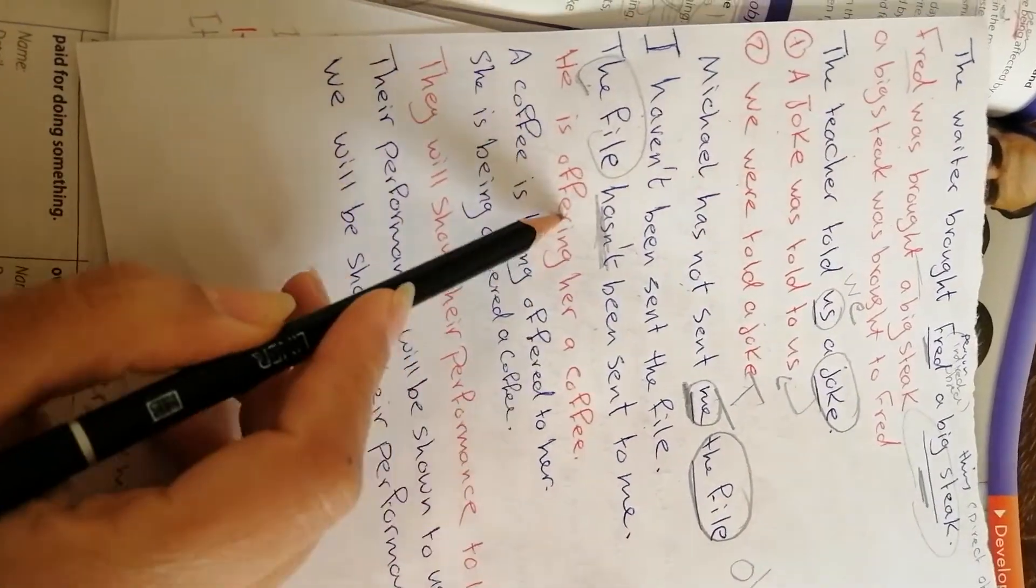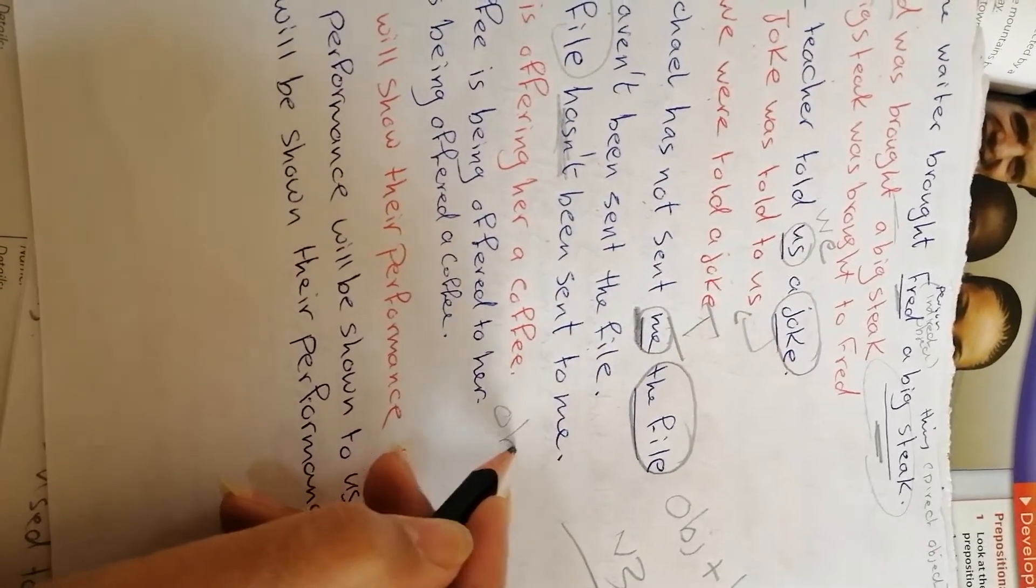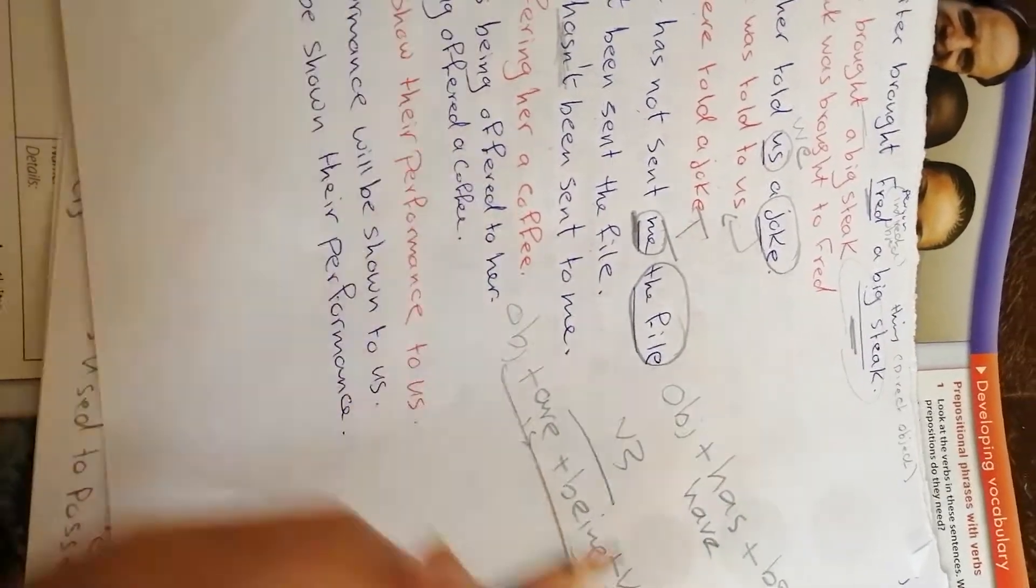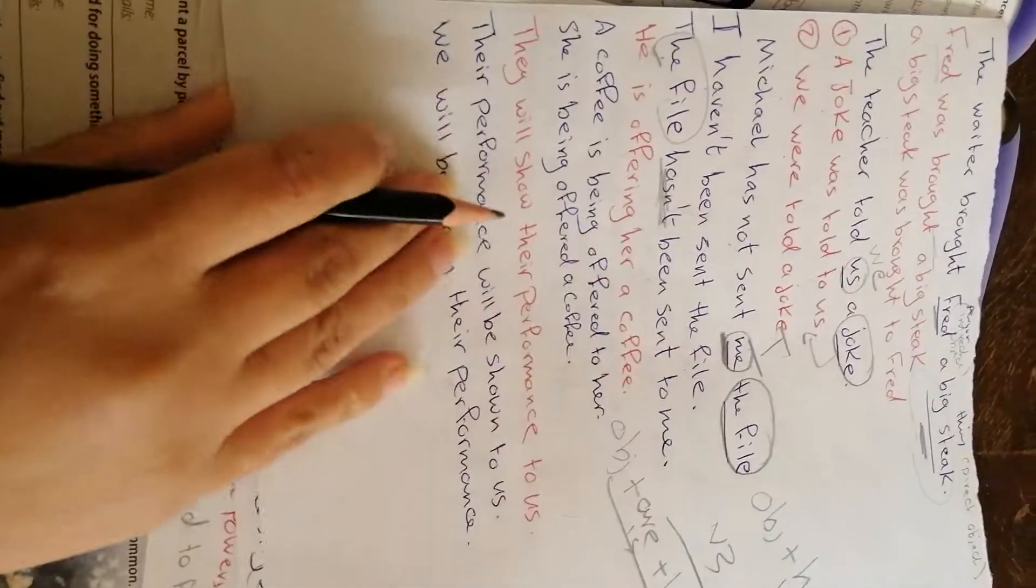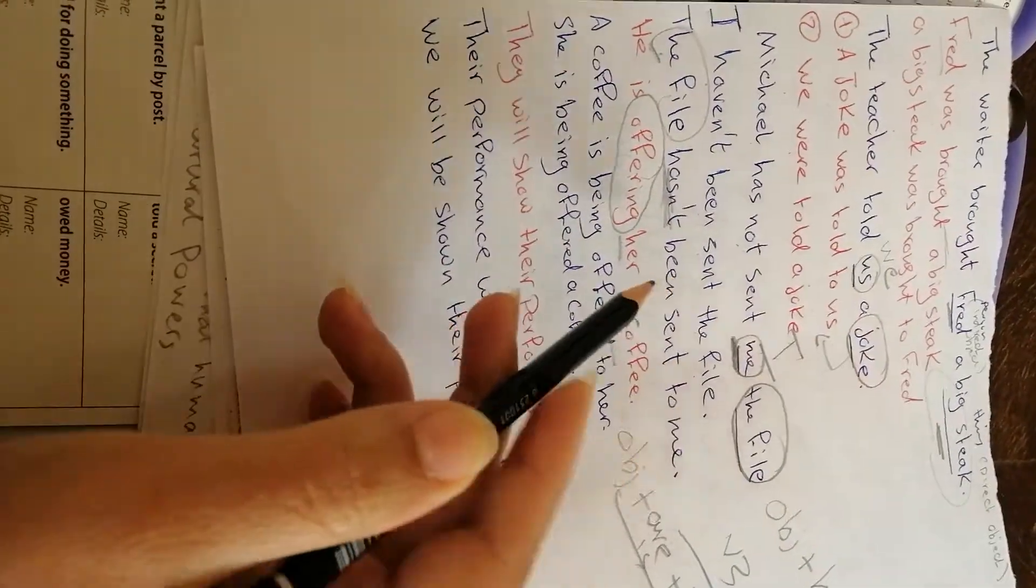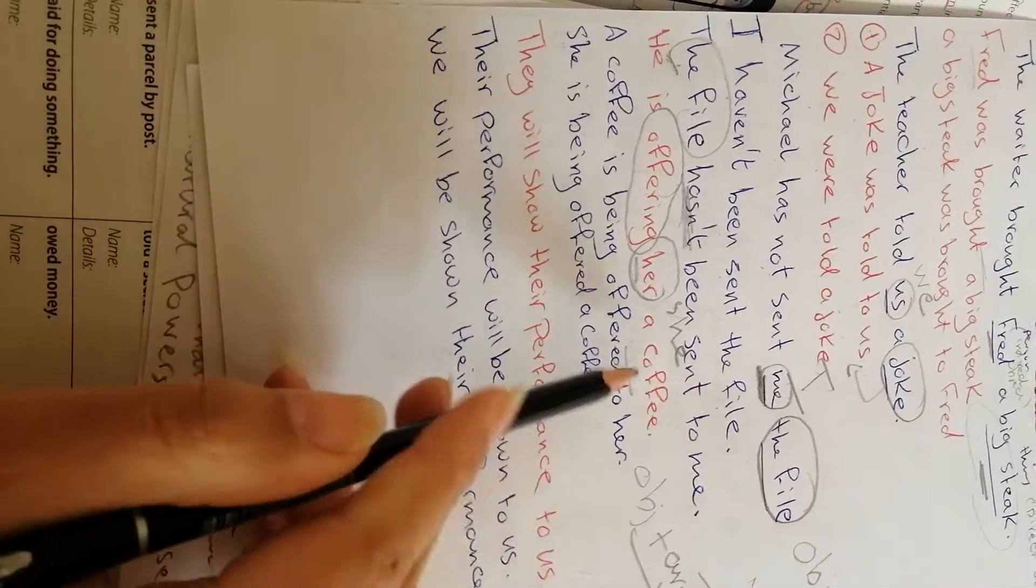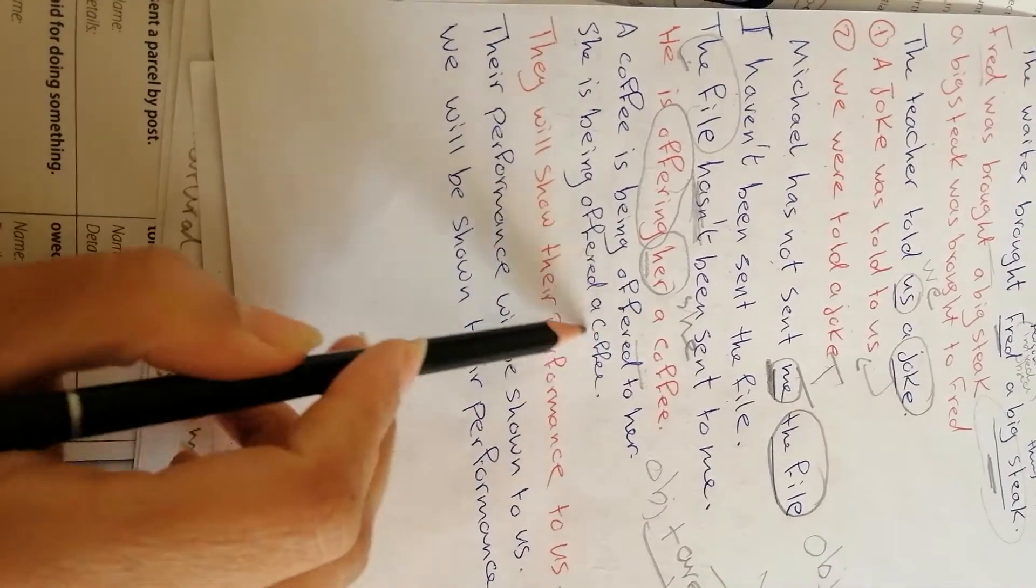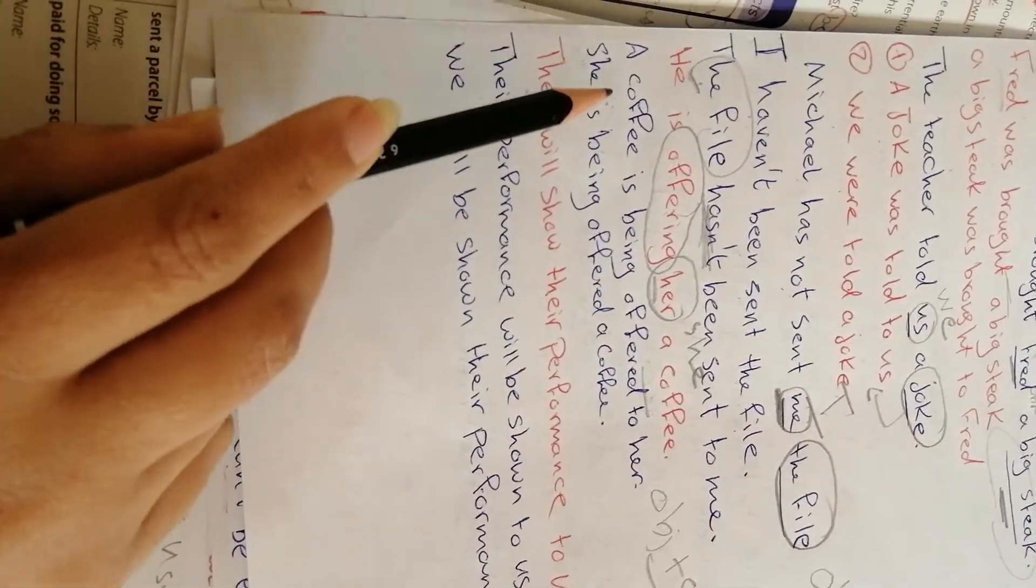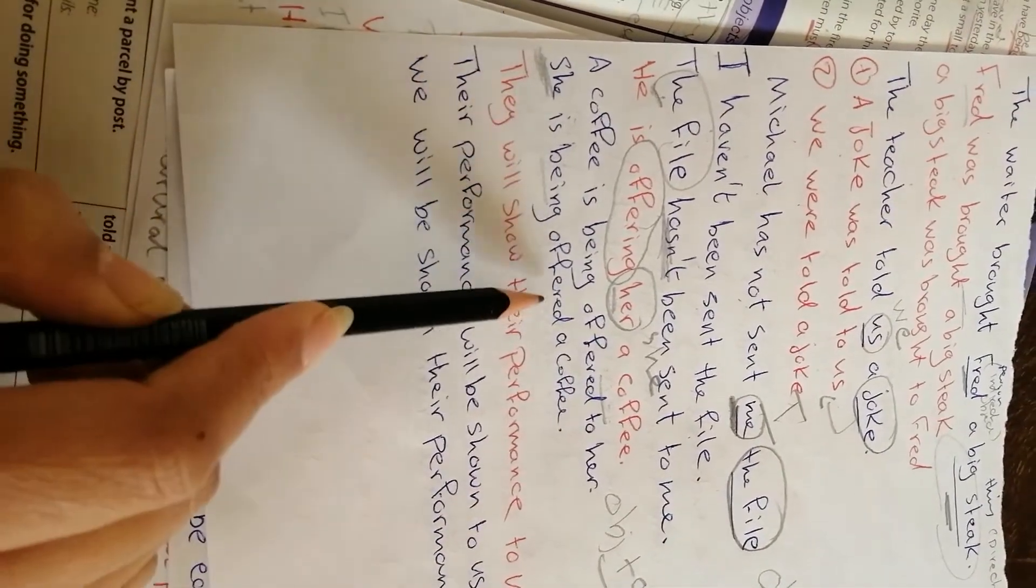He is offering her a coffee. What is the tense? Present continuous. The passive structure for present continuous: Object plus are/is plus being plus verb 3. He is offering her a coffee. Offer is one of the verbs followed by two objects: her and coffee. Her is an object now, but when it becomes in the first place of the sentence, we have coffee and her, so we do two passive. A coffee is being offered to her by him. When the person is the subject of the sentence: She is being offered a coffee.